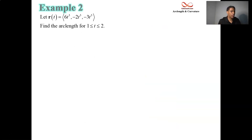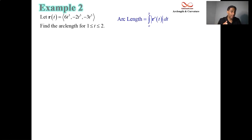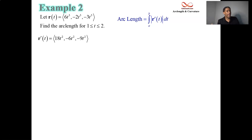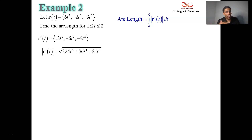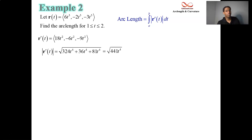Let's see another example. Each component is a cubic with a different coefficient out front. We're interested in the time interval from 1 to 2. Taking the velocity vector, we get components 18t squared, negative 6t squared, and negative 9t squared. Squaring each: 324t⁴, 36t⁴, and 81t⁴. Adding those up: 324 plus 36 plus 81 equals 441 — and that's a perfect square.